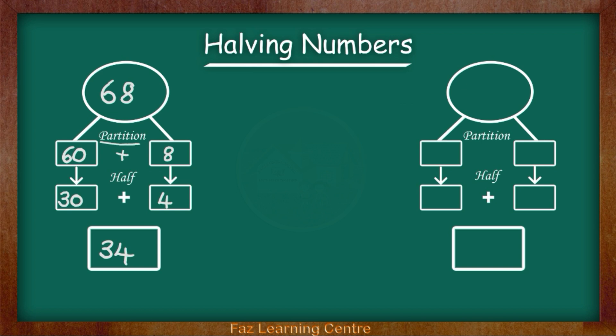Let's look at another example. My next number is 84. Now we are going to do exactly the same method. We are going to partition 84. We are going to put 84 in parts. 84 has 8 tens which makes 80.